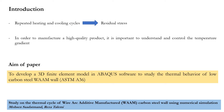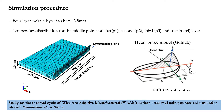Therefore, the main aim of the present work is to develop a 3D finite element model in Abaqus software to study the thermal behavior of low carbon steel wall. The 3D model was meshed with the eight-node element type, and the numerical temperature cycle was obtained at middle points of four layers. A DFLUX subroutine was used in order to apply a moving heat source.